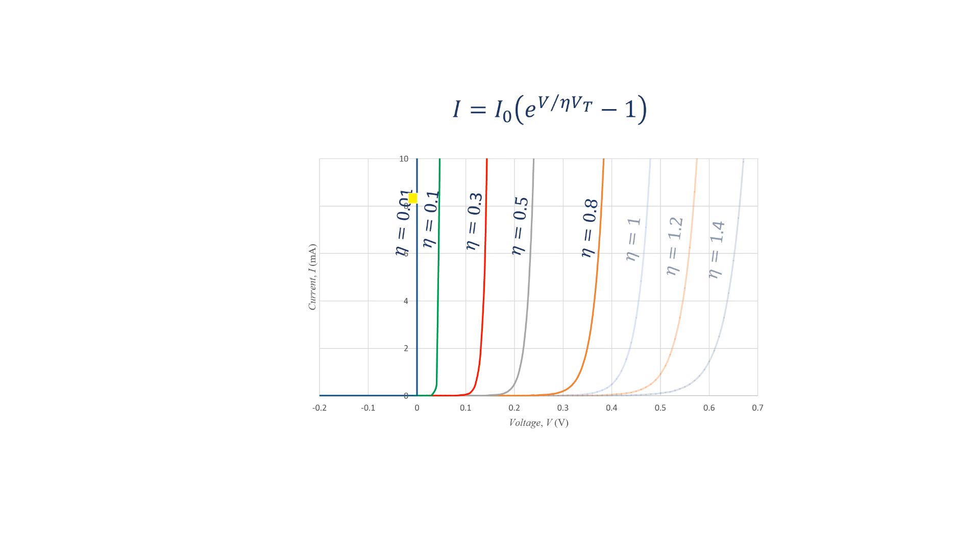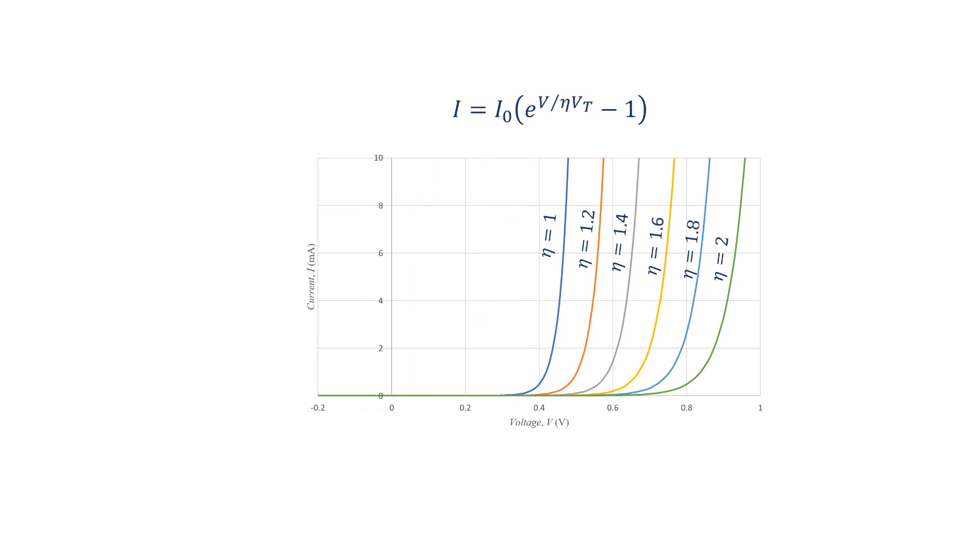When eta is very close to 0, the characteristics are similar to the ideal diode. Therefore, the ideality factor shows how close the diode is to the ideal diode. I emphasize that, as far as I know, semiconductor diodes do not have ideality factor less than 1.